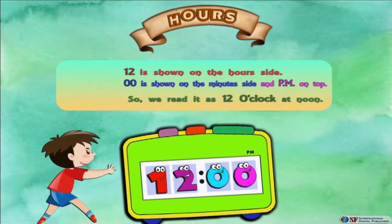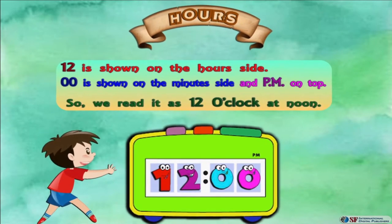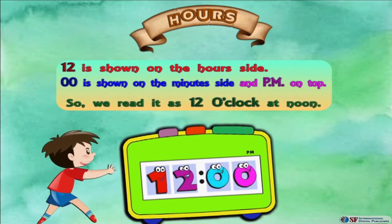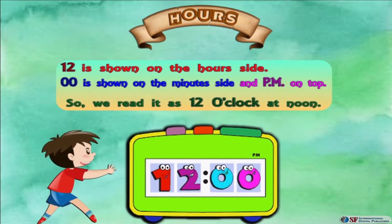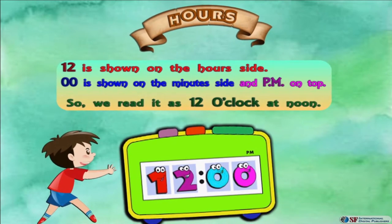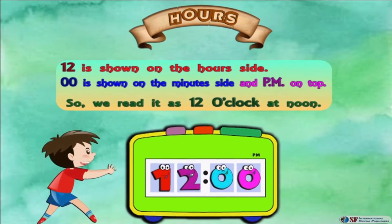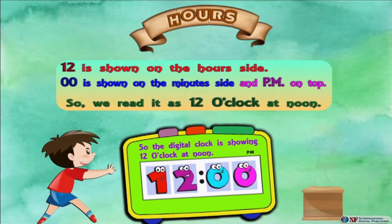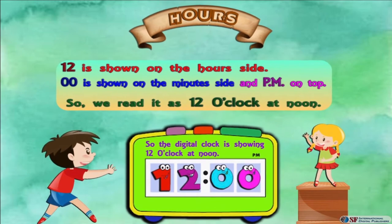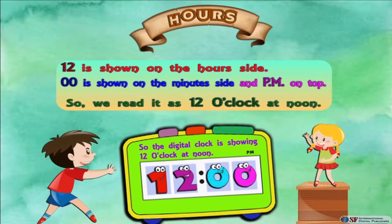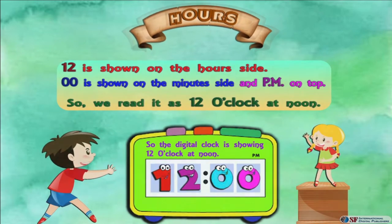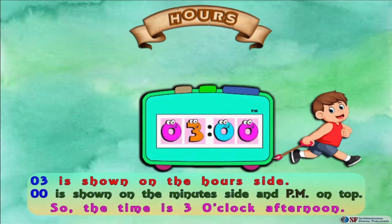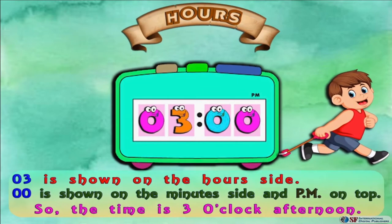12 is shown on the hours side, 00 is shown on the minutes side, and P.M. is shown on top, so we read it as 12 o'clock at noon. The digital clock is showing 12 o'clock at noon.